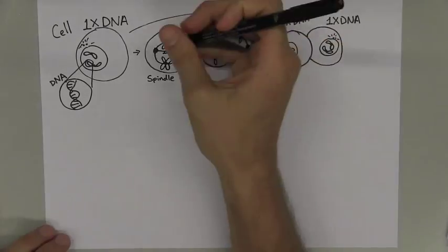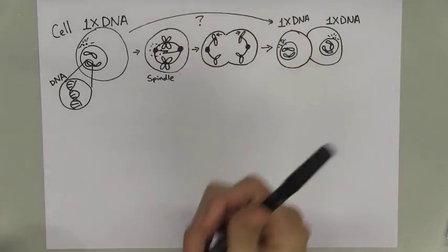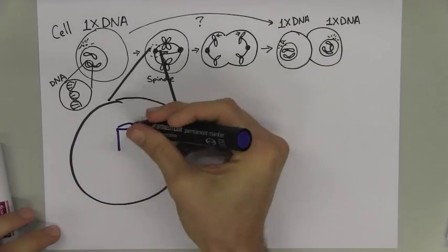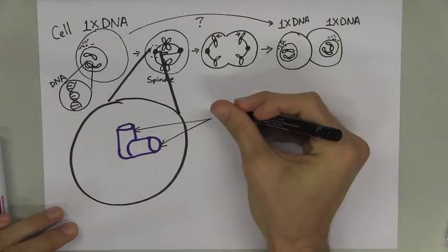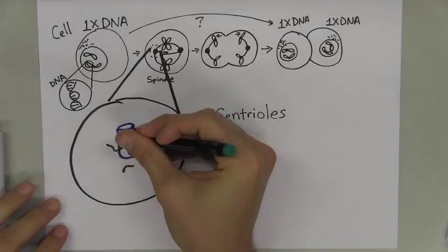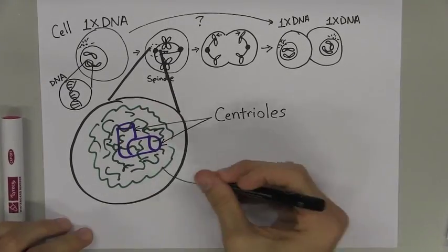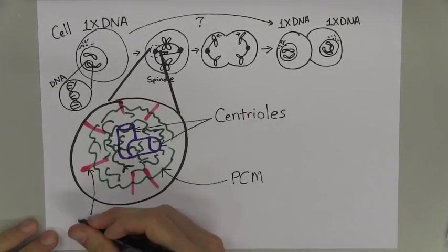The main microtubule organizing center in eukaryotic cells is the centrosome. It consists of two barrel-shaped centrioles, surrounded by an amorphous interconnected mass of protein called the pericentriolar material, or PCM.